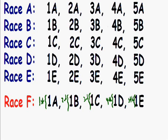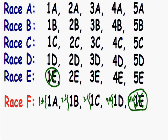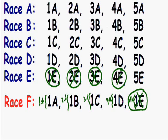At this point we actually know a lot of information. Let's take a look at runner 1E — we know that he finished fifth place in this race, so we know for a fact he's not a top 3 runner, and we can cross him off the list. But what does that tell us about runner 2E? We know that 1E is not a top 3 runner, and we know that 2E is slower than him, so we can cross out 2E as well. Same thing for 3E — and we can cross out every single person from race E.